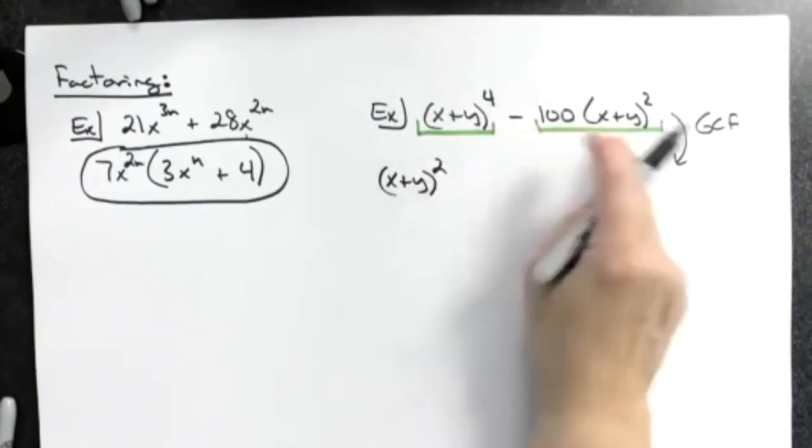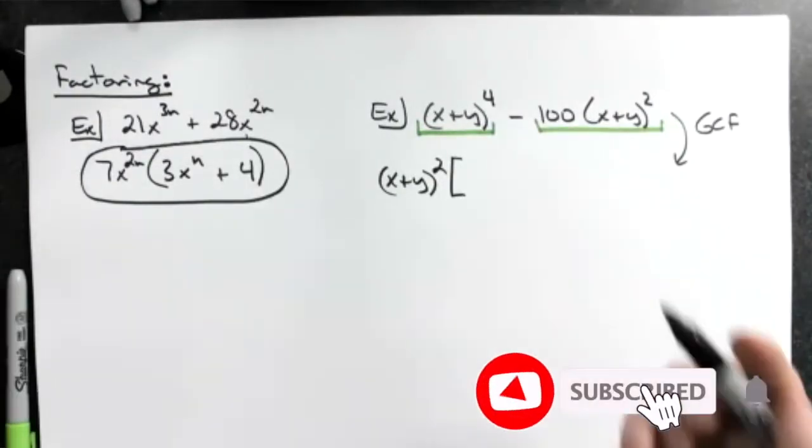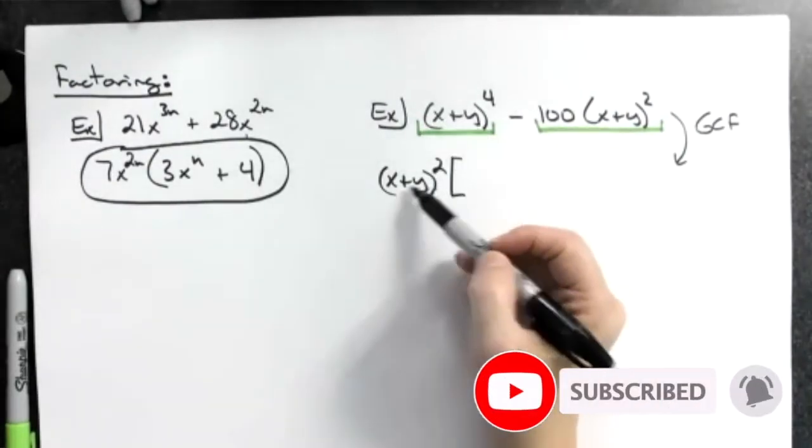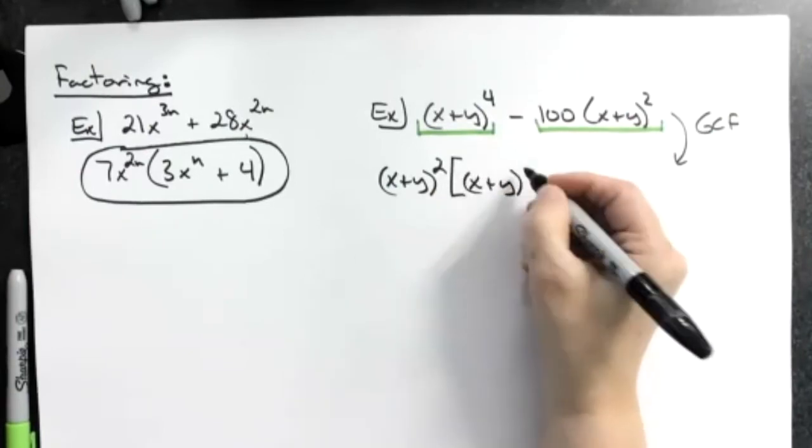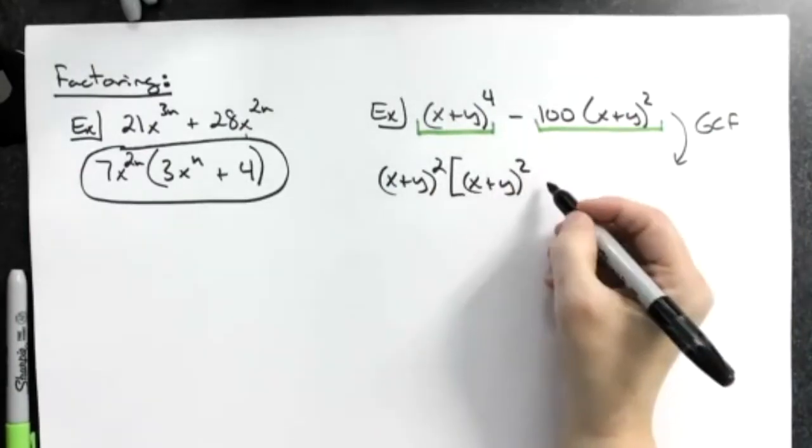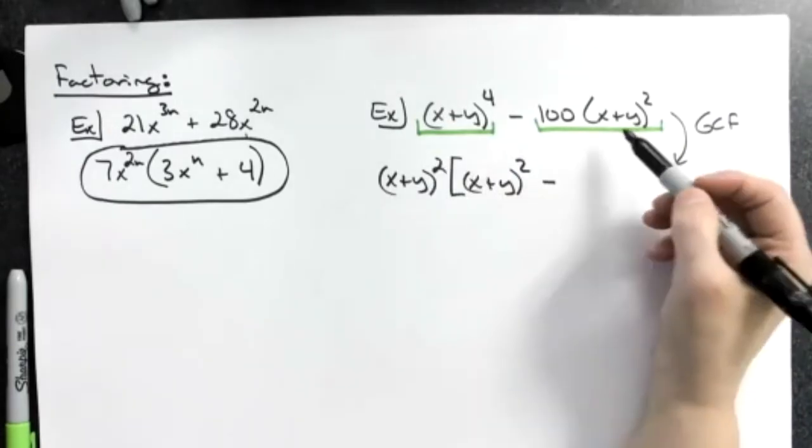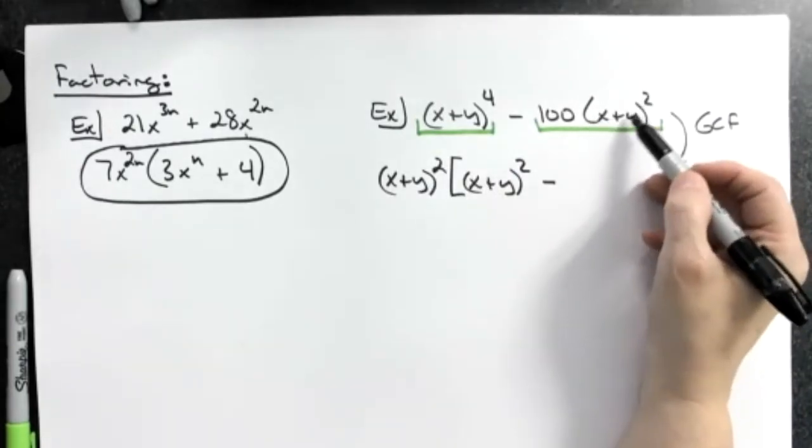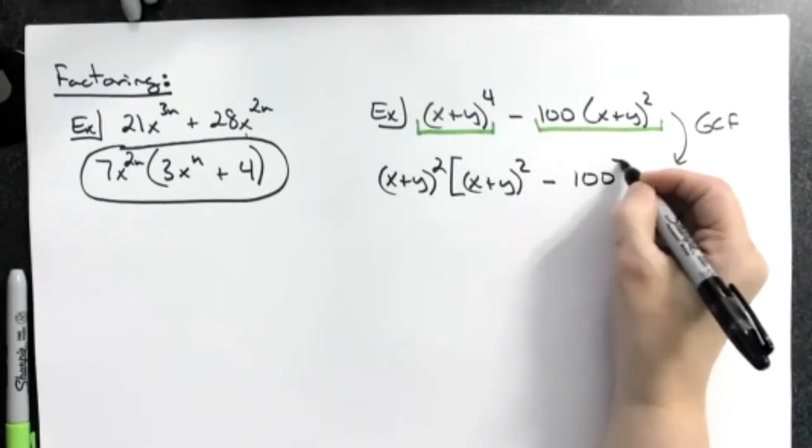Now because I do have some parentheses inside there, I'm going to go square brackets here just in case, because sometimes too many curvy brackets get confusing. Here I've got the same base raised to the fourth power. I'm taking two of them out, which means I have two left over. So x plus y to the second power minus sign will come straight down. I have an x plus y to the second. I'm taking that portion out of this term. The only thing left over then would be that 100.